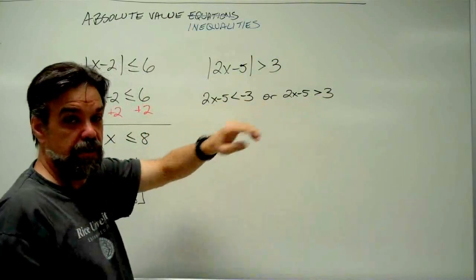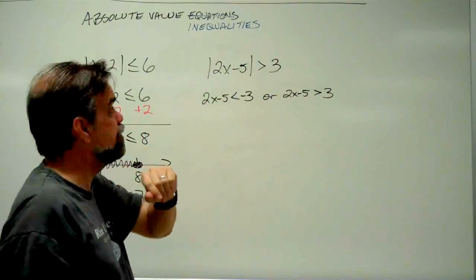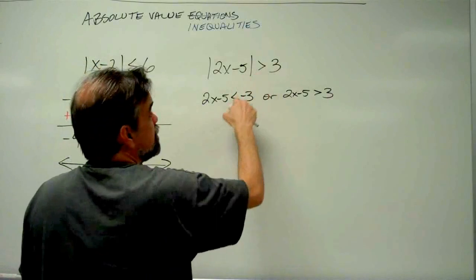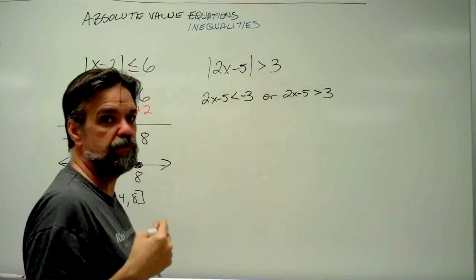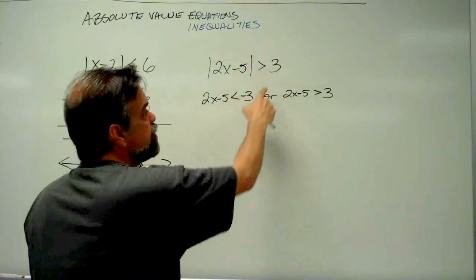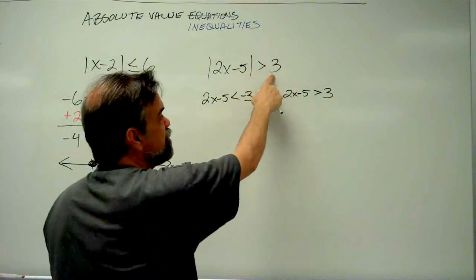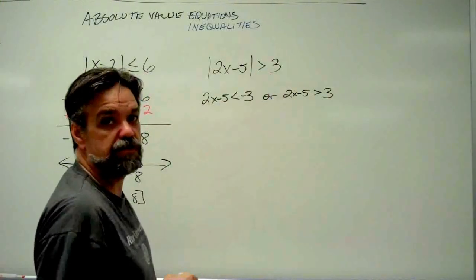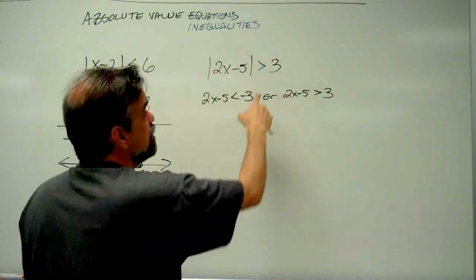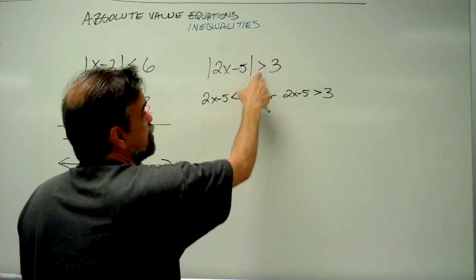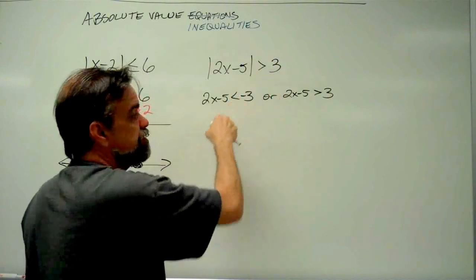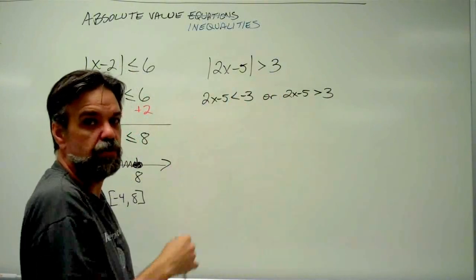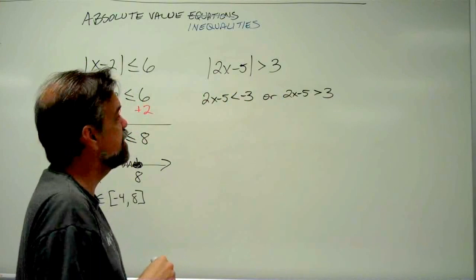Be really careful about the direction of your inequalities. One thing to remember: when we multiply by a negative, it changes the direction of the inequality. Notice that the left side got multiplied by negative 1, and sure enough the inequality did change direction — so that's a way to check your work.